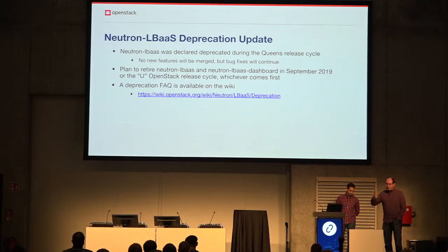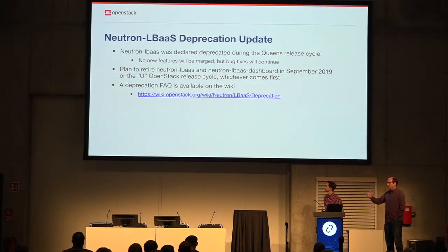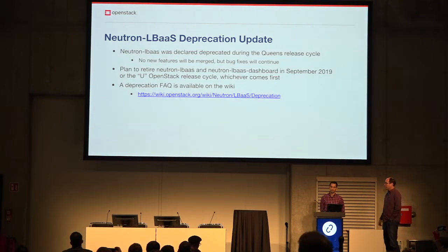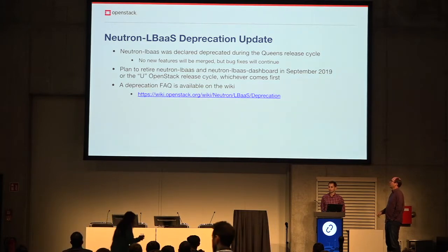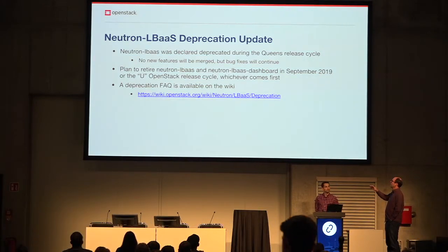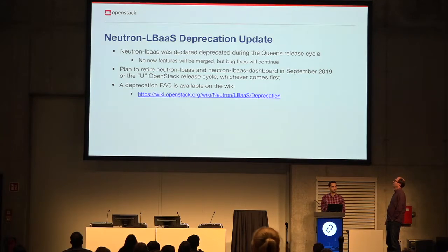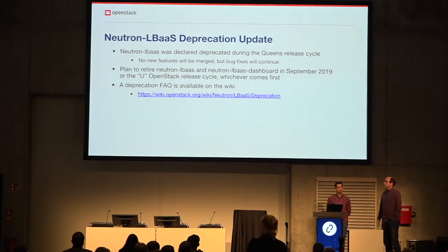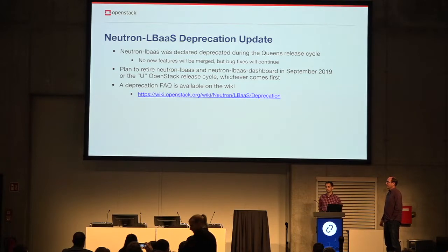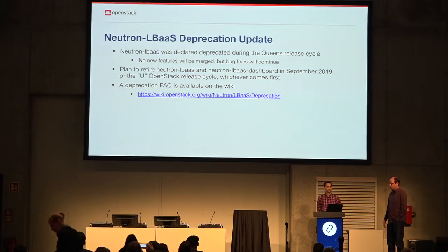We started out as part of Neutron, so we had a Neutron LBaaS which used the Octavia driver to do Octavia load balancers. Now we've moved everything to Octavia. We want to deprecate Neutron LBaaS — we declared this in the Queens cycle — and no new features will be merged since then. It hasn't been very active anyway, so there's not a huge loss.